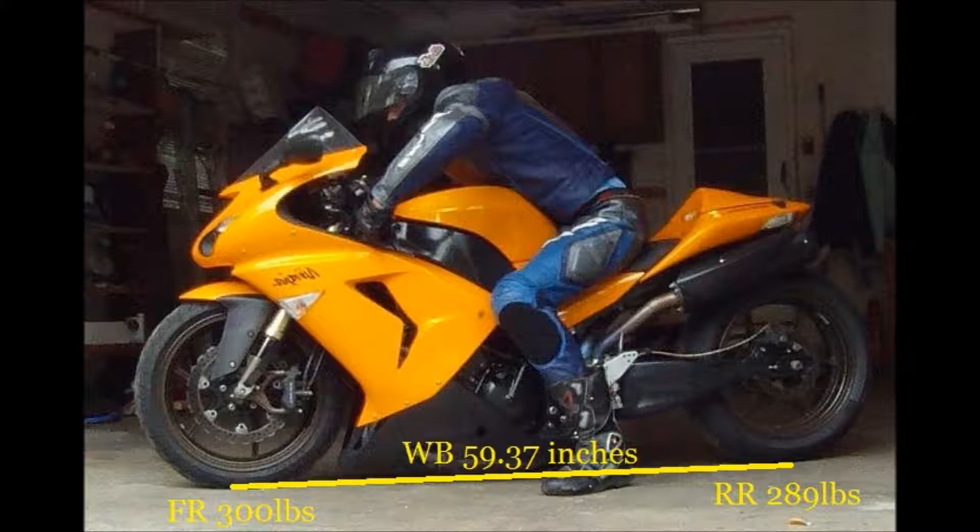Then you have to put the bike on the scales and find the exact weight on the front of the bike and on the back of the bike. Make sure the bike is on level ground that way you get good numbers. In my case, I had 300 pounds on the front of the bike and 289 pounds on the back of the bike. The combined weight is 589 pounds. You need to write down the front, the rear, and the combined weight.